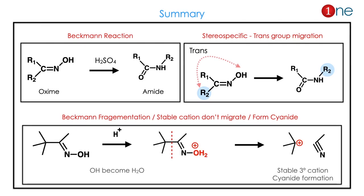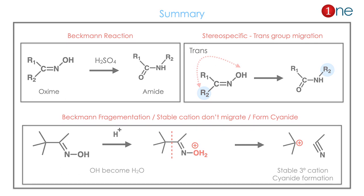Let us summarize what we have seen. Beckmann rearrangement is the conversion of an oxime to an amide in the presence of acid. The reaction is stereospecific — the trans group always migrates to form the amide. Then there is Beckmann fragmentation: if there is a stable cation formation, you always end up with Beckmann fragmentation and a cyanide product.